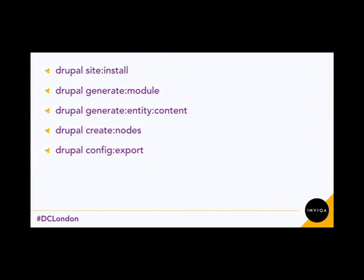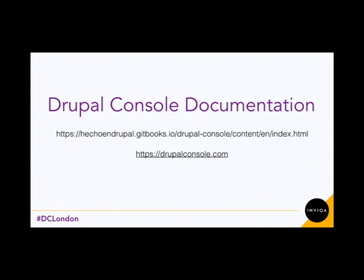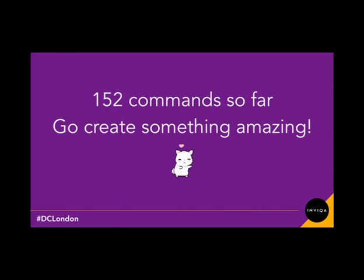So just to review what I've covered: you can install your Drupal site using `drupal site:install`, create your own custom module using `drupal generate:module`, create your own content entities using `drupal generate:entity:content`, create dummy nodes, and export your configuration. The Drupal Console documentation is really good — you can go to drupalconsole.com, which shows all the different functions available. There are 152 commands so far, so go ahead, use it, and go create something amazing. Thank you.